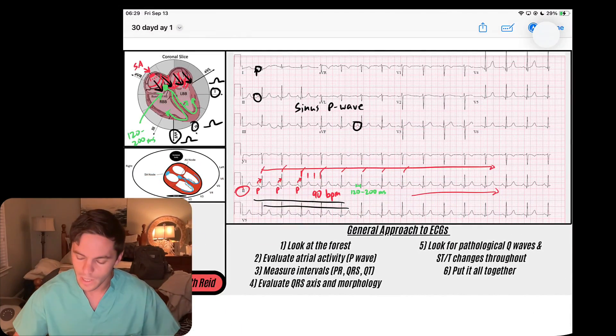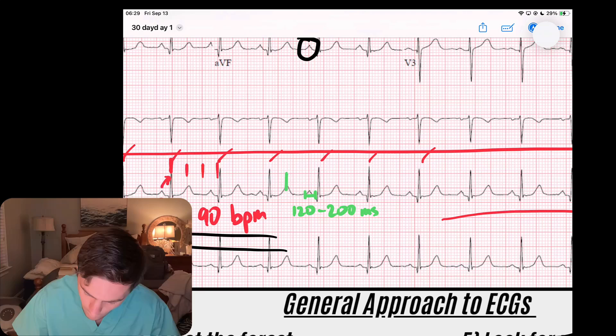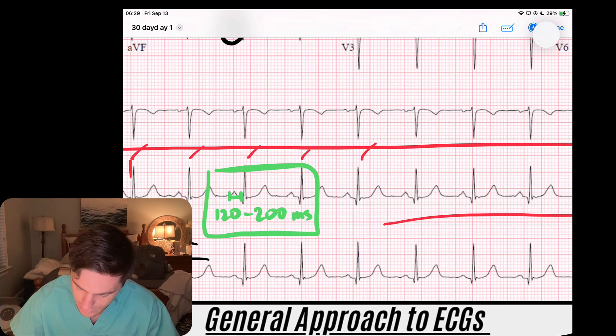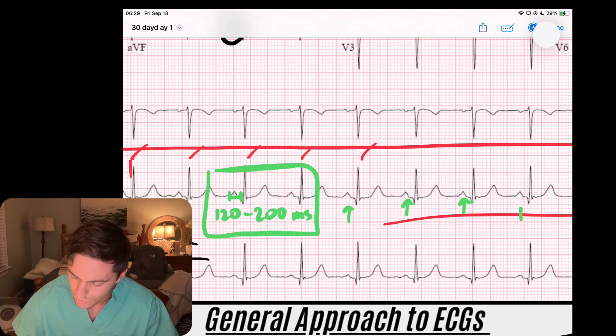That PR interval here is perfectly between 120 and 200 milliseconds, so that tells me the PR interval is normal. However, notice I only looked at one PR interval. You need to understand how the AV node is behaving throughout time, throughout the entirety of the rhythm.